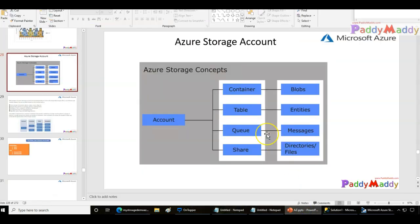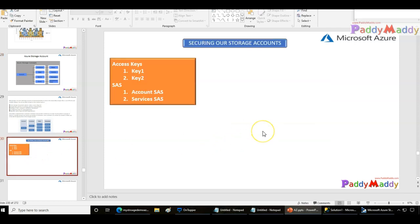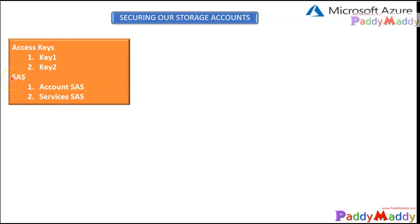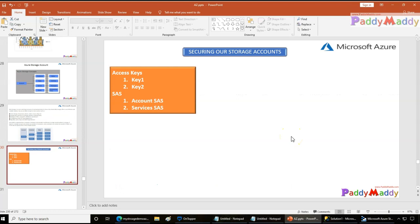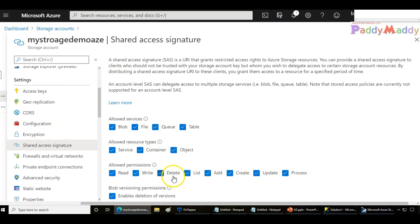If you want to give access only to what is required within a storage account — say just for a container or for tables — that's where we have the option for SAS-based configuration. SAS is a shared access signature, and this is different from access keys. It allows us to provide more granular control over what services are accessible, what resources are accessible, and the actual permissions the person who knows the SAS will have.